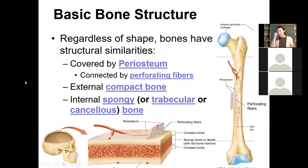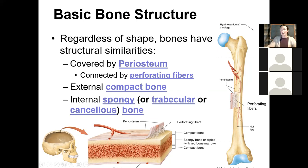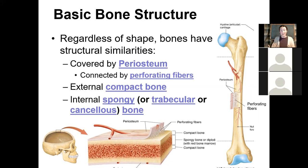No matter what shape of bone we are talking about, all bones have roughly the same structure — they are made up of the same types of tissue and covered with the same types of membranes. All of your bones are collectively covered by the periosteum. The periosteum is critical in delivering blood flow to the bones, critical in bone development, and critical in healing bone because the periosteum has both fibers as well as stem cells. The root 'ost' means bone — 'peri' means around the perimeter, so this structure goes around the perimeter of the bone, covering the entire bony structure.